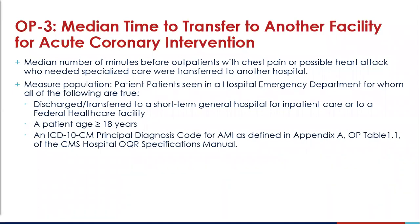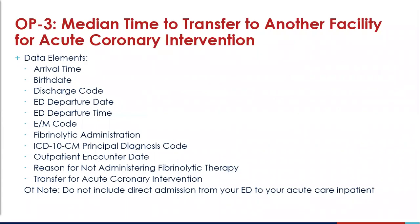The second measure is OP3, which looks at the median time to transfer to another facility for acute coronary intervention. This measure is identified by the median number of minutes before outpatients with chest pain or possible heart attacks who needed specialized care were transferred to another hospital. Evidence suggests that the early use of primary angioplasty in patients with STEMI results in a significant reduction in mortality and morbidity — the earlier primary coronary intervention is provided, the more effective it is. Current recommendations support a door-to-balloon time of 90 minutes or less. For this measure, you will not include direct admissions from your ED to your acute care inpatient areas.